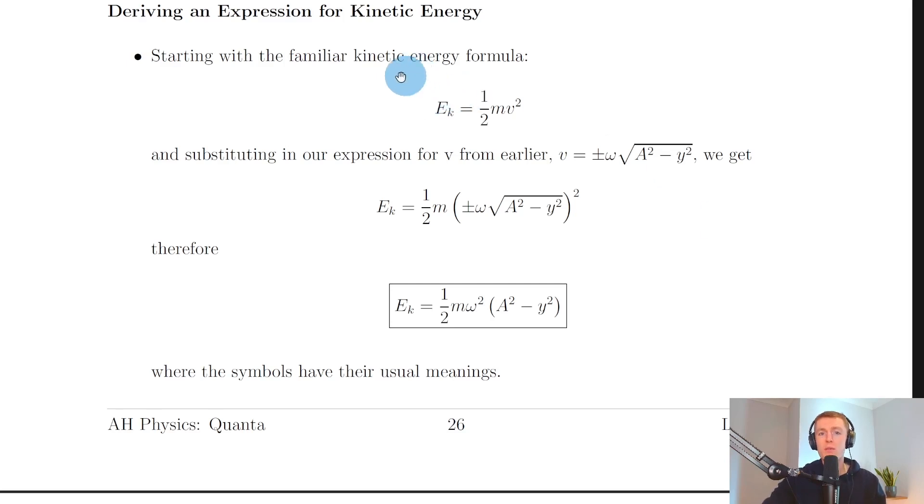Starting with the familiar kinetic energy formula, Ek = ½mv², we can substitute in our expression for the velocity of an object undergoing SHM, which is on your relationship sheet: v = ±ω√(A² - y²).